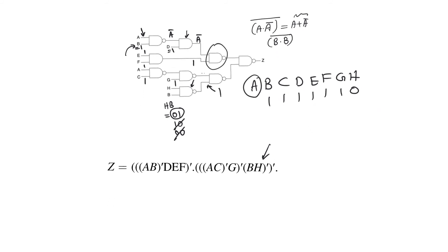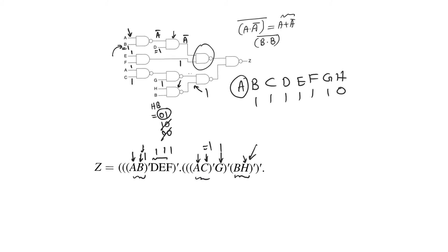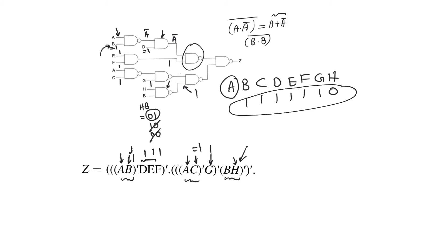We can confirm this from the logic equation. For A to make an appearance, B must equal one. All variables multiplying that term must also equal one. In the other branch, C must equal one for A to pass through, and G must equal one. The term (BH)-bar must equal one, meaning at least one of B or H must be zero. Since B is already set to one, H must equal zero. This is the input combination that allows the glitch to appear at the output.